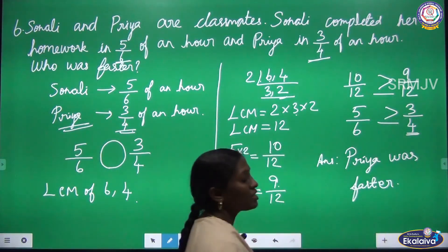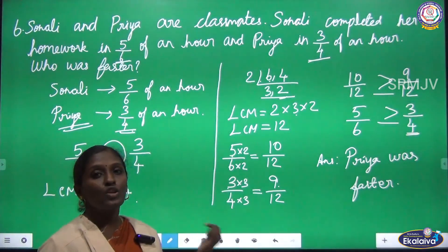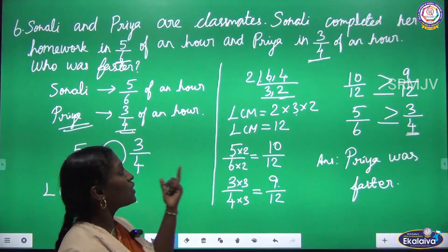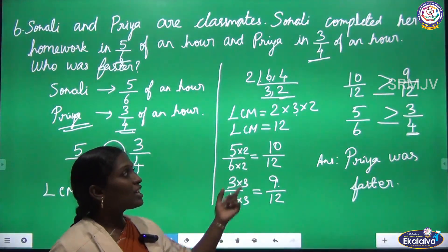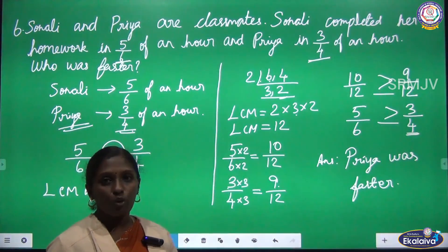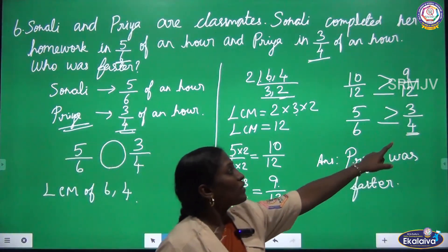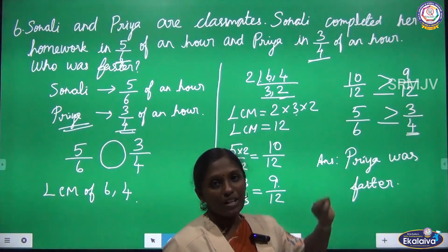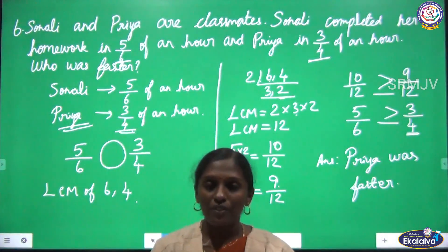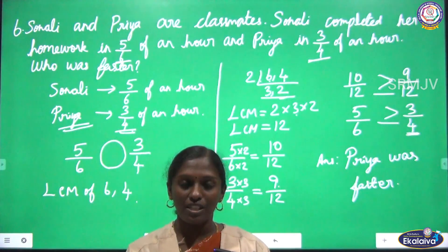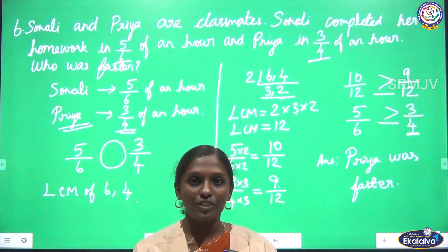Is it clear, children? These two fractions are unlike fractions, so we convert them to like fractions by finding the LCM, then compare. Since they asked who was faster, we find the smaller fraction. Is it clear? To receive our online lessons, please press the subscribe button and you will receive the latest updates. Thank you, children.